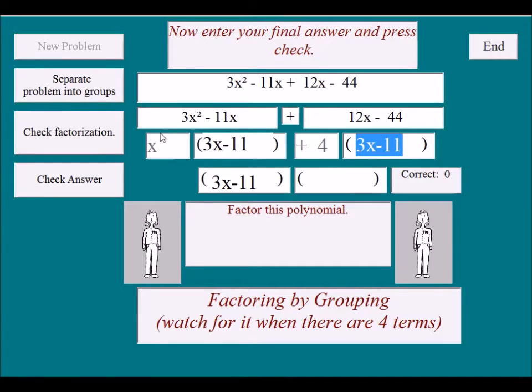If we factor 3x minus 11 out of this group, we are left with x. If we factor 3x minus 11 over here, we are left with 4. But we need to put in the plus 4. And now we check and we will win.